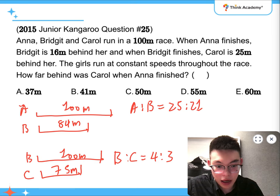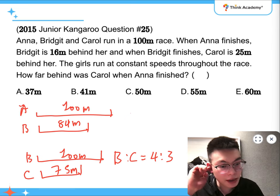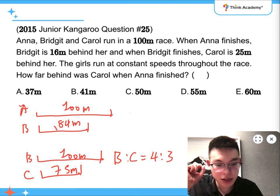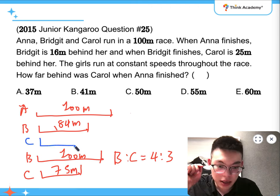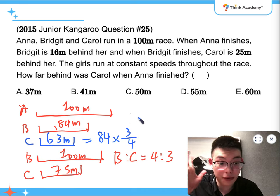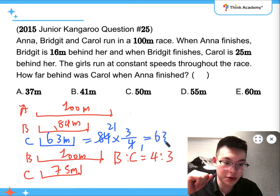So well, basically I don't even need to find the ratio for Anna and Bridget, because I know that Bridget to Carol is four to three, so it means that when Bridget is at eighty-four meters, Carol would be at sixty-three meters, which is equal to eighty-four times three-quarters. So twenty-one times three, which is sixty-three meters.